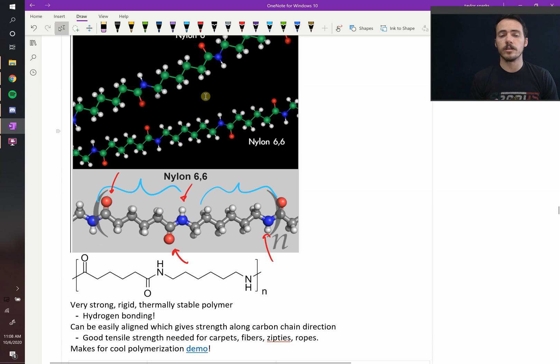And nylon 6-6 is a really strong polymer. Strong, rigid, thermally stable because you have stronger inter-chain bonding.